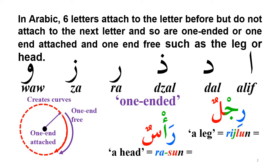What I mean by one-ended is that these letters — alif, dal, ra, za, and wa — do not attach to the next letter. For example, in 'rijlun,' the ra does not attach to the jim next to it, but the jim attaches to the lam. Similarly in 'rasun,' the ra does not attach to the alif, and the alif does not attach to the sin. So according to their shape or structure, these letters have a one-ended meaning — one end is attached to something and the other end is free.